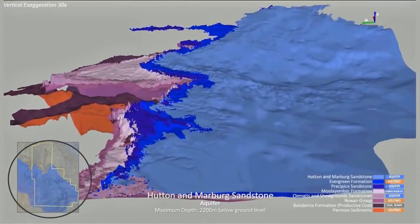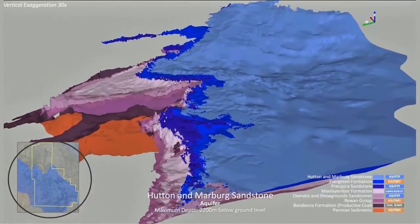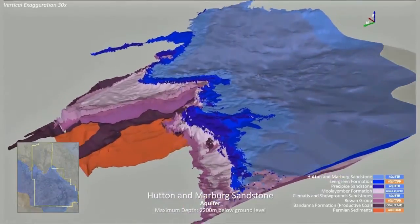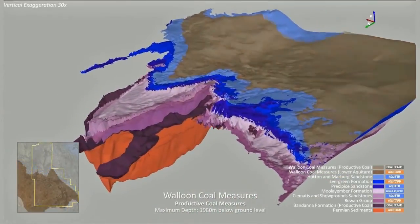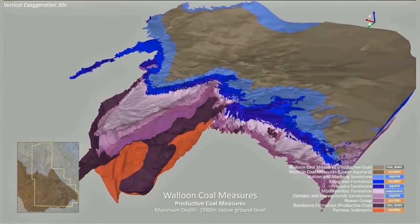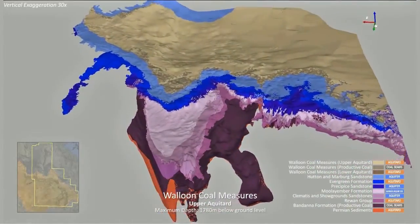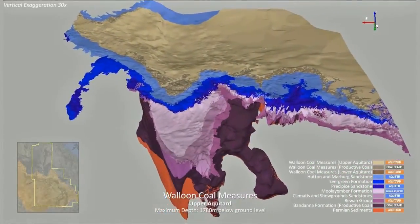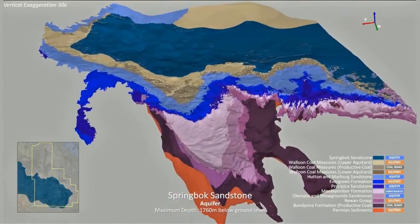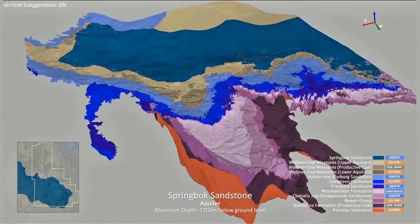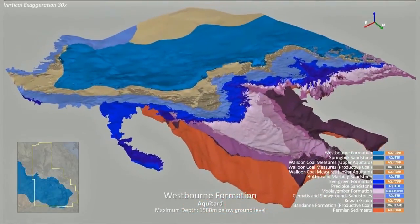The yellow line on this map is the Surratt Cumulative Management Area. The Walloon Coal Measures is the target formation for CSG production in the Surratt Basin. Water is pumped from this layer to release the gas. There are geological formations above and below the Walloon Coal Measures.